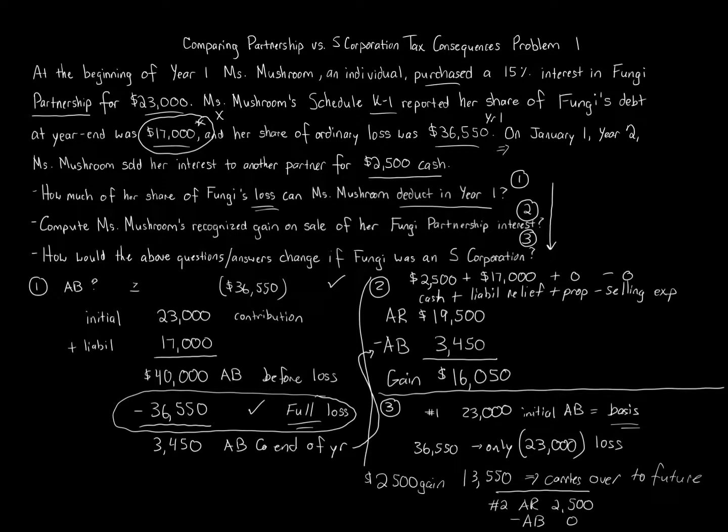Now, another thing to note is I'm not going to go into this, but there is the effect of that lingering loss that you didn't get to consider that was out there. Remember, you only got to use $23,000 of the loss in that situation. Well, the issue is, well, what about the $13,550 that carries over in that situation? In certain situations, you could use that benefit of that loss in the next year, even when you sell, but we're keeping it basic, the basic consequences. So it's just $2,500 gain if you have an S-Corporation in year two, and again, a $23,000 loss in year one.